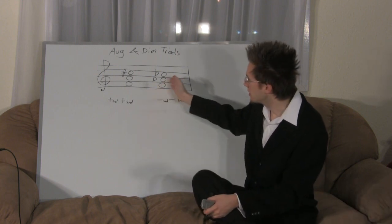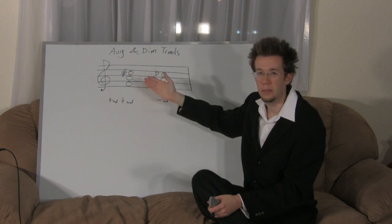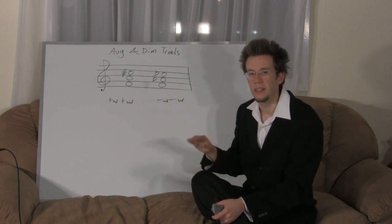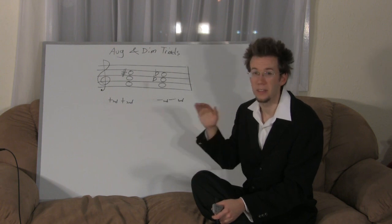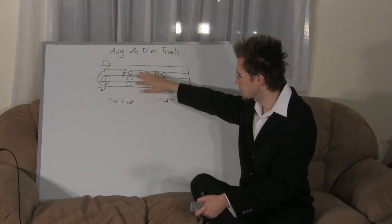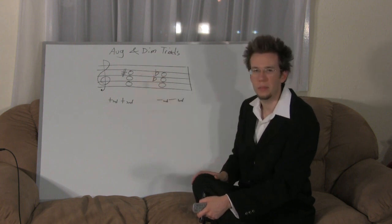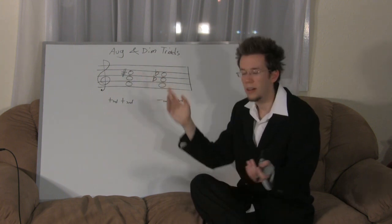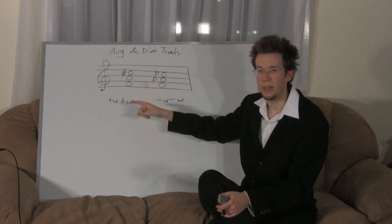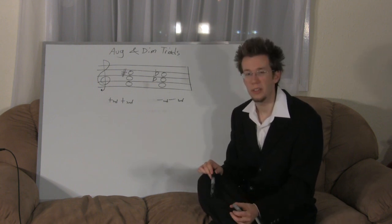These chords can be written in different inversions. To identify if a chord is augmented or diminished, first rearrange the notes into stacked thirds — like a snowman shape — and then count the intervals between them. If you see major third, major third, it's augmented. That's basically it for augmented and diminished triads.